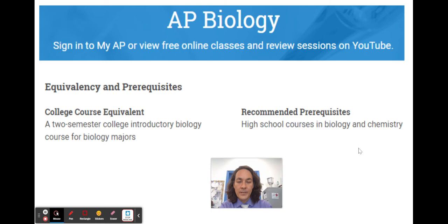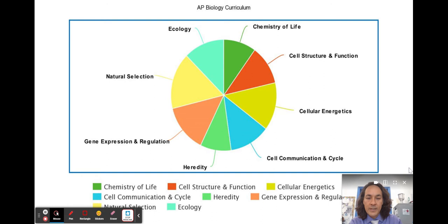Here are the units just at a glance. In order, it's chemistry of life, cells, cellular energetics, cell communication, cell cycle, heredity, gene expression, regulation, natural selection, and ecology. It kind of goes from micro to macro, so from small to big, and these pie charts represent the amount of time we'll spend on each.